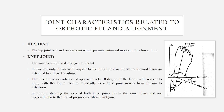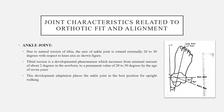In normal standing, the axis of both knee joints lies in the same plane and is perpendicular to the line of progression, as shown in the figure. The third major joint is the ankle joint. Due to the natural torsion of the tibia, the axis of the ankle joint is rotated externally 20 to 30 degrees with respect to the knee axis. Tibial torsion is a developmental phenomenon which increases from approximately 2 degrees in newborn babies to a permanent value of 20 to 30 degrees by the age of 7 years. This developmental adaptation places the ankle joint in the best position for upright walking.